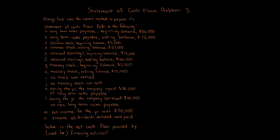Retained earnings ending balance $120,000. Treasury stock beginning balance $5,800; treasury stock ending balance $10,400. No stock was retired. No treasury stock was sold. During the year, the company repaid $38,000 of long-term notes payable and borrowed $30,000 on new long-term notes payable. Net income for the year was $50,000. Assume all dividends declared were paid.